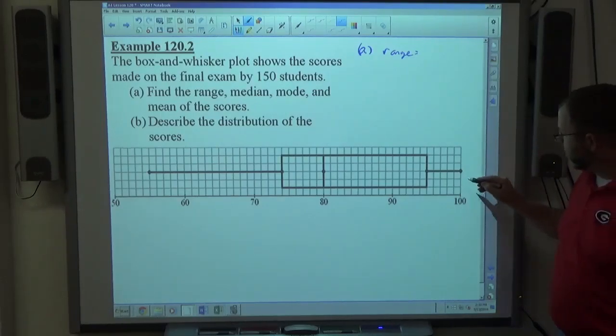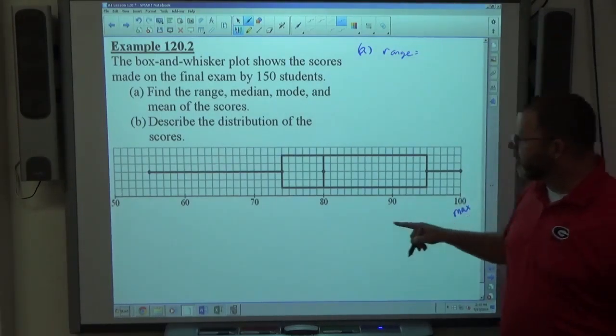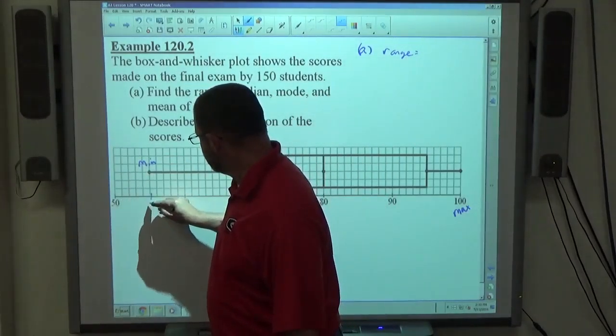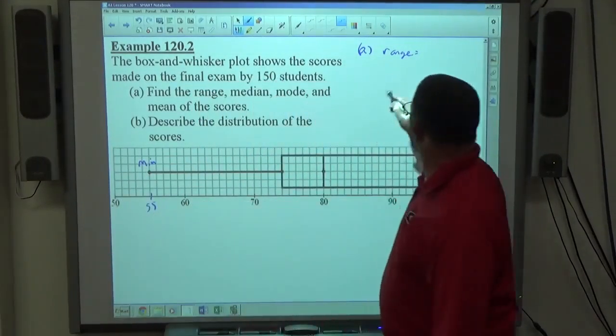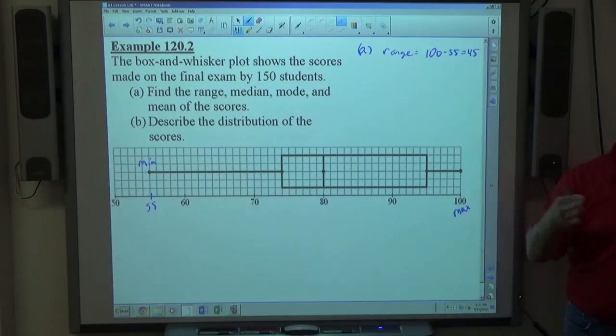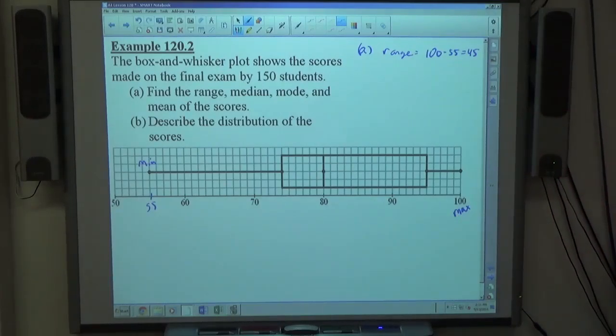The biggest number is 100, right? And the minimum number looks like 55. So the range is just going to be 100 minus 55, which is 45. So if we're asked to find range, box and whisker plot is sufficient to help us find that, right?